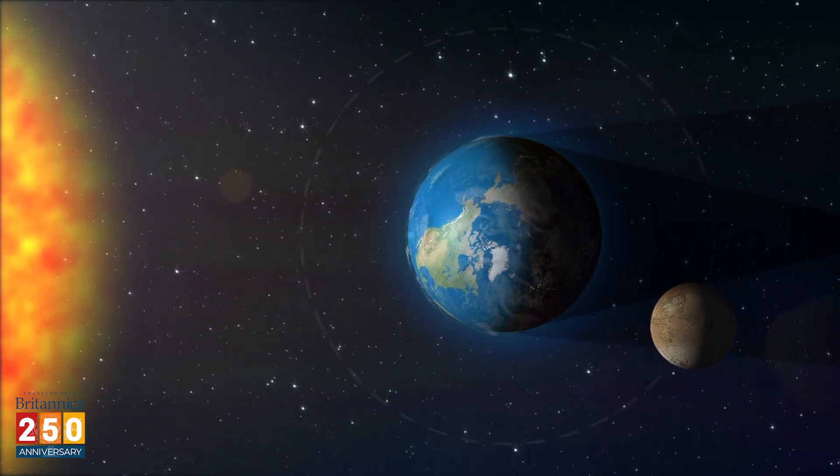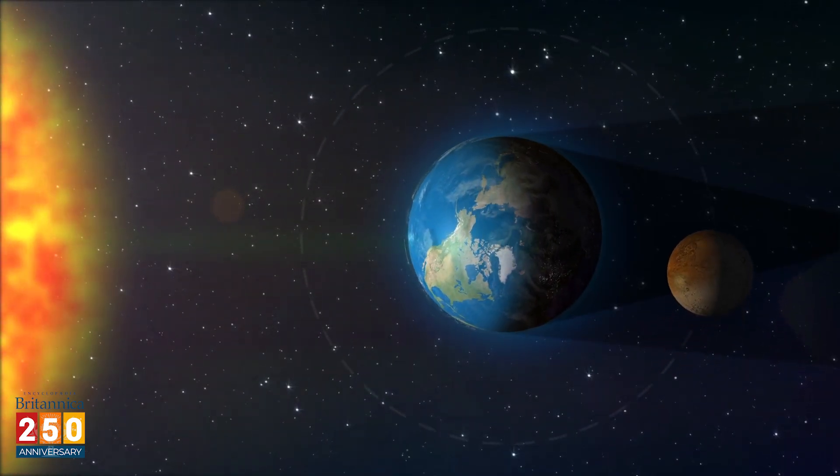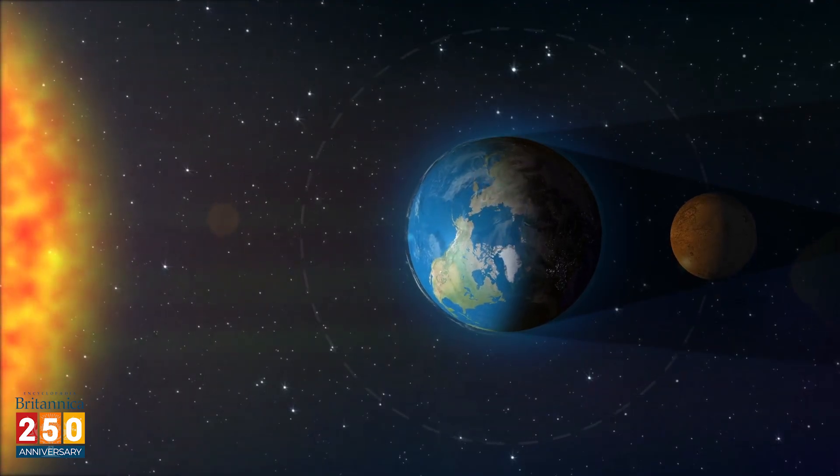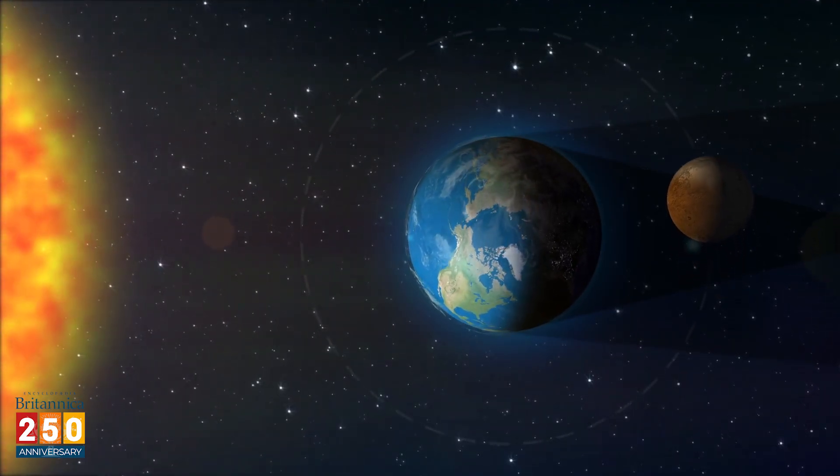There are no annular lunar eclipses, because the Earth is so big that its umbra always appears larger than the Moon. The Moon literally can't get out of the Earth's shadow.